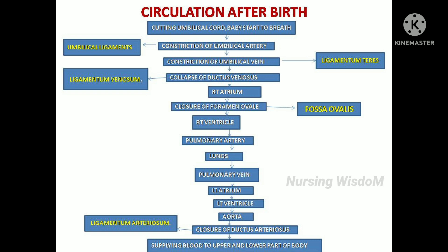After the foramen ovale closes, it becomes the fossa ovalis. From the right atrium, blood flows to the right ventricle, and from the right ventricle via the pulmonary artery, the blood goes to the lungs and gets oxygenated. Through the pulmonary vein, this oxygenated blood drains back to the left atrium, then to the left ventricle and to the aorta during ventricular systole. After highly oxygenated blood reaches the aorta, the bypass between the pulmonary artery and the aorta — called the ductus arteriosus — will close due to high oxygenated blood, increased bradykinin, and decreased prostaglandin E2 in the blood. After closing, the ductus arteriosus becomes the ligamentum arteriosum.